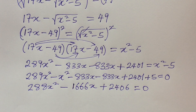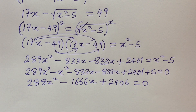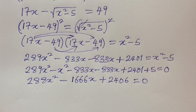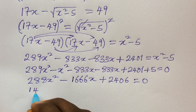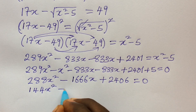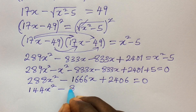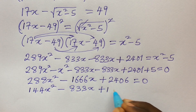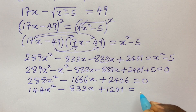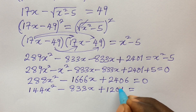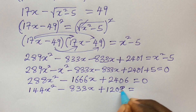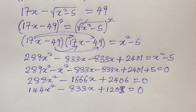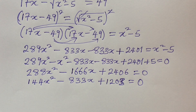This is a quadratic equation. You can see that 2 is common to every term, so let's divide through by 2. Dividing gives us 144x squared minus 833x plus 1203, equal to zero. At this point we bring in the quadratic formula to solve this.